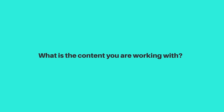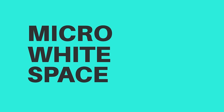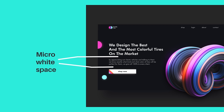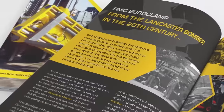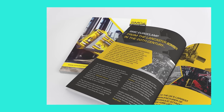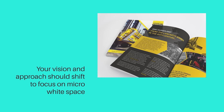When designing, ask yourself what content you're working with and what the client has given you. It's important to distinguish between macro white space and micro white space. Macro white space is the large expanse areas of nothingness on your design, whereas micro white space refers to the smaller sections of nothingness between lines of text, paragraphs, and closely packed design objects. If a client gives you a lot of text, you won't have much macro white space to work with.